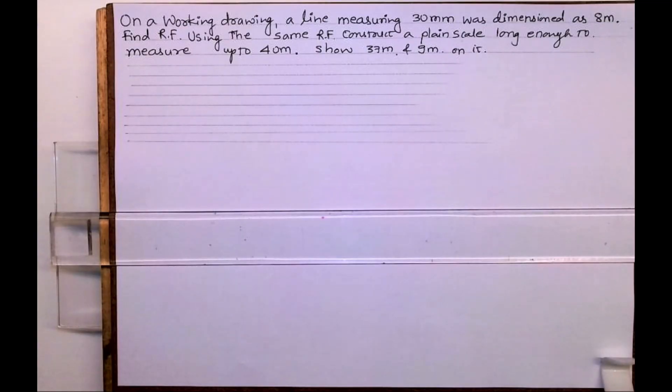Welcome to technical drawing. Today we'll see this sum in plane scale. On a working drawing, a line measuring 30mm was dimension is 8 meter. Find the RF using the same RF, construct a plane scale long enough to measure up to 40 meter. Show 37 meter and 9 meter on it.